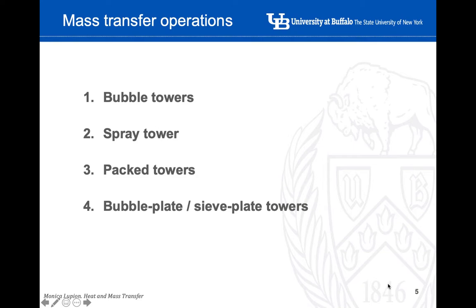Let's see together a few examples of mass transfer equipment. We are going to see four different examples: bubble towers, spray towers, packed towers, and plate towers.